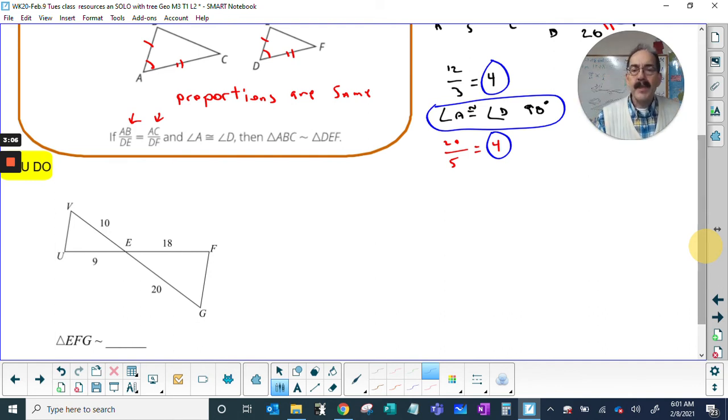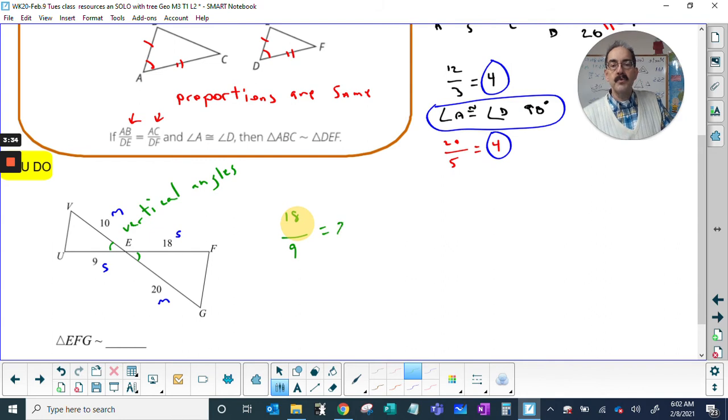Alright, welcome back. I'm gonna go short-short, medium-medium. The key to this bowtie problem is vertical angles. In this case, let's show it: 18 goes to 9, yep, 20 goes to 10, yep.